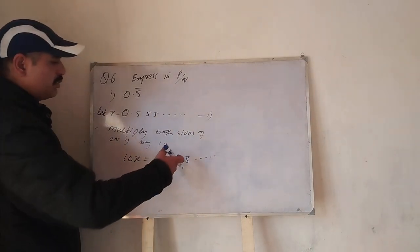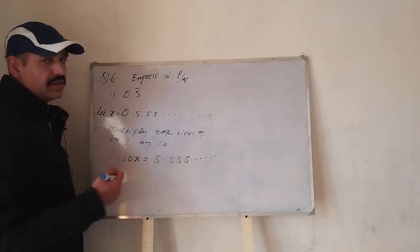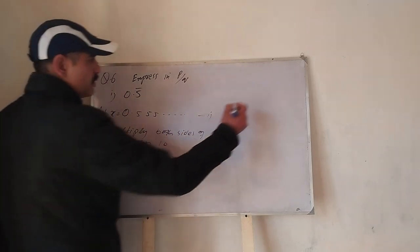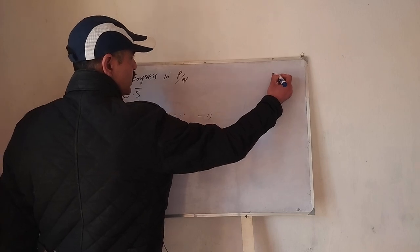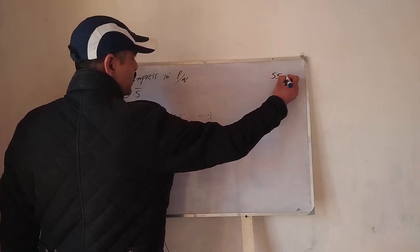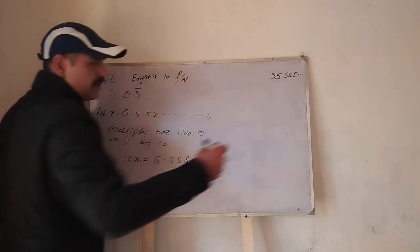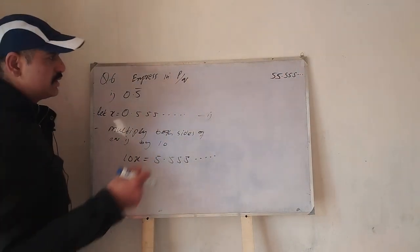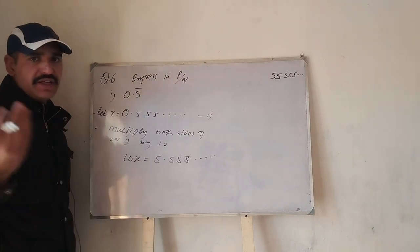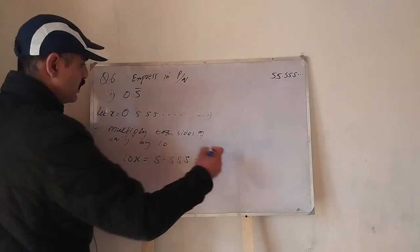Agar multiply karein to yeh kuch is tarah se ho jayega: ek five yahaan left side par aa jayega aur yeh three fives jo hain rahenge, because yeh repeat ho raha hai infinitely. This is equation number 2.